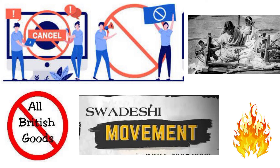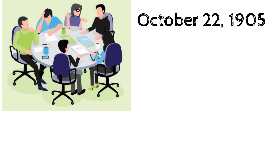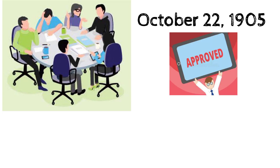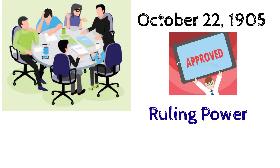On the other hand, Muslims, who were neglected earlier, welcomed the partition. On October 22, 1905, they held a meeting at Dhaka to express their approval of the partition. The creation of the new province provided them ruling power and an incentive to unite into a compact body.